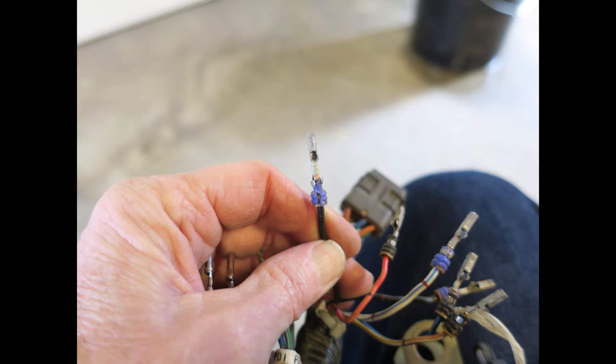I've seen the extra wings crimped onto bare wires, onto the insulation, and onto a seal that fits into the harness connector.